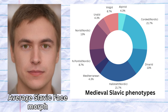I usually group North Pontid, Halstat, Norid and Corded phenotypes into one group I call Nordic, but in this case I decided to split them into separate groups to make the prediction more precise. The most common phenotypes were Corded and Halstat, followed by Dinarid and Norid, although other phenotypes were found as well.